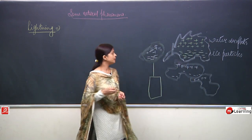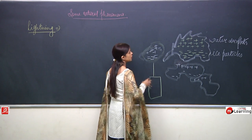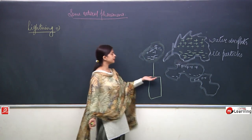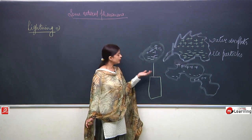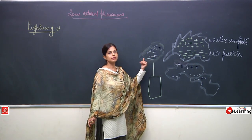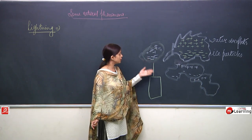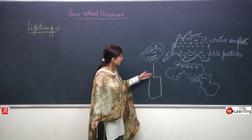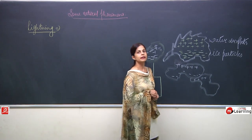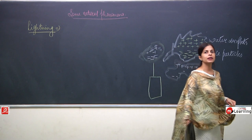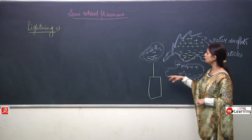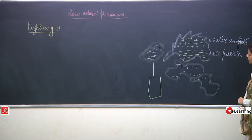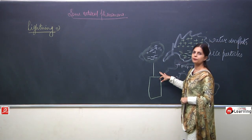So a lot of positive charge will be developed in the upper part of the tall building. Now when positive charge is here in the building and negative charge is there in the cloud, the charge will flow from the cloud towards the building.